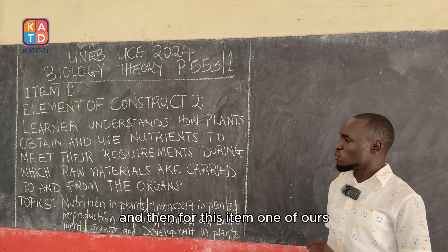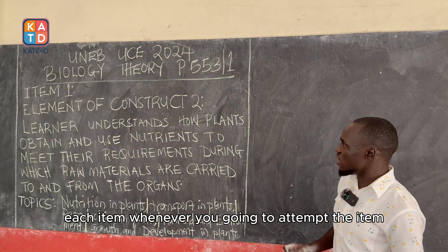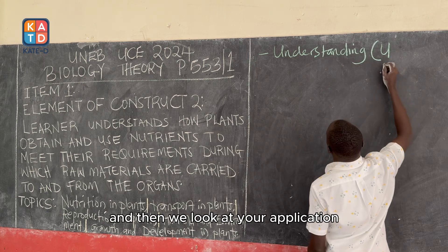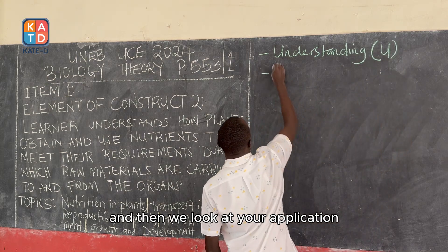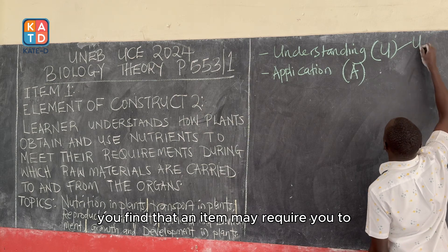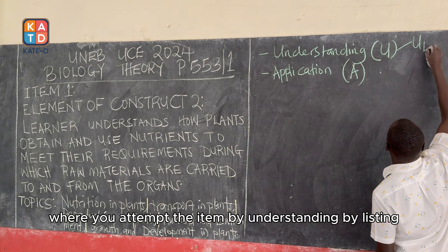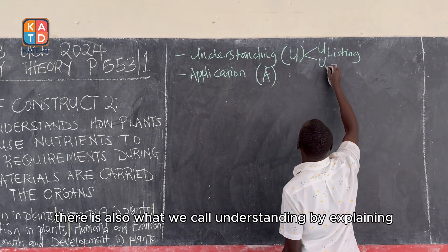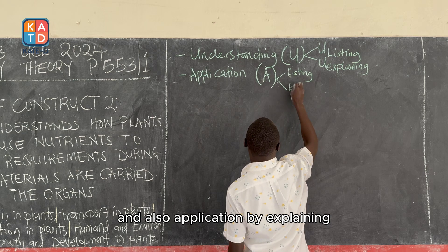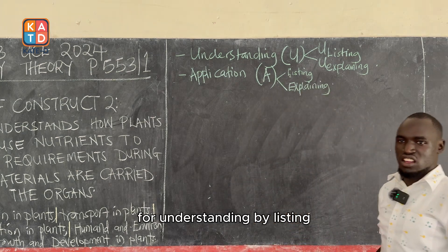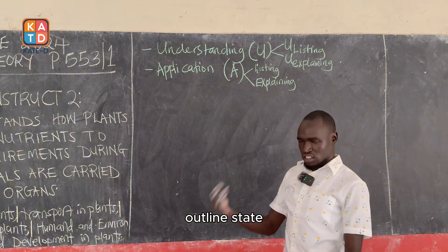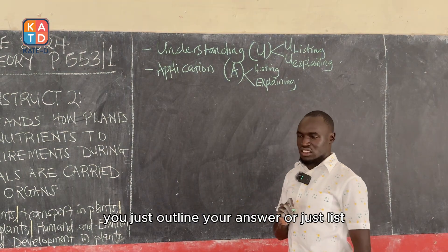For this item 1, whenever you are going to attempt the item, we look at your understanding of biology and your application of the knowledge of biology. For understanding, an item may require you to demonstrate understanding by listing. For understanding by listing, it works for questions which just require you to mention, list, outline, or state — you just give or list your answer.